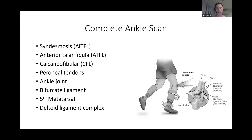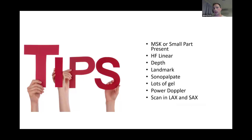Some tips: use an MSK or small parts preset with a high-frequency linear transducer. Most of these structures are quite shallow, which makes visualizing the bone quite nice. You can use the bony landmarks you can palpate, such as the fibula, lateral malleolus, or styloid process on the fifth. If there are any areas that look abnormal, the ability to sonopalpate can be really helpful to differentiate abnormal anatomy from actual pathology.